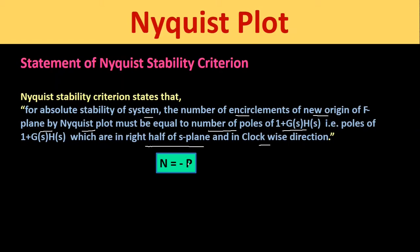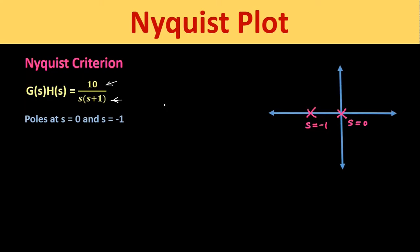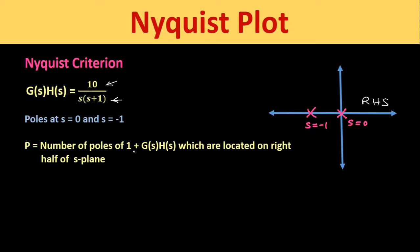The negative sign indicates the clockwise direction of the path. To understand this, let us take an example. We have the open-loop transfer function G(s)H(s) = 10 / [s(s+1)]. No zeros are present in the numerator, and the denominator gives two poles at s = 0 and s = -1. Representing these on the s-plane, both poles lie in the left half of the s-plane, not in the right half. Since P equals the number of poles of 1 + G(s)H(s) located in the right half, P = 0.